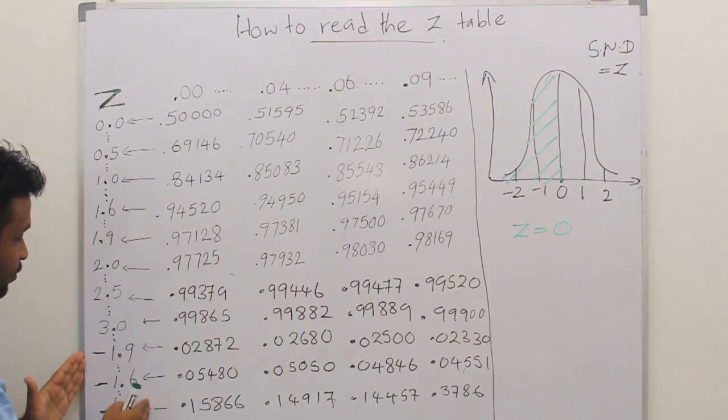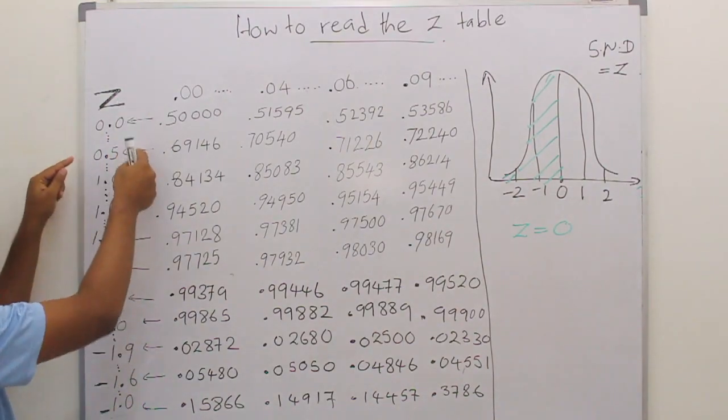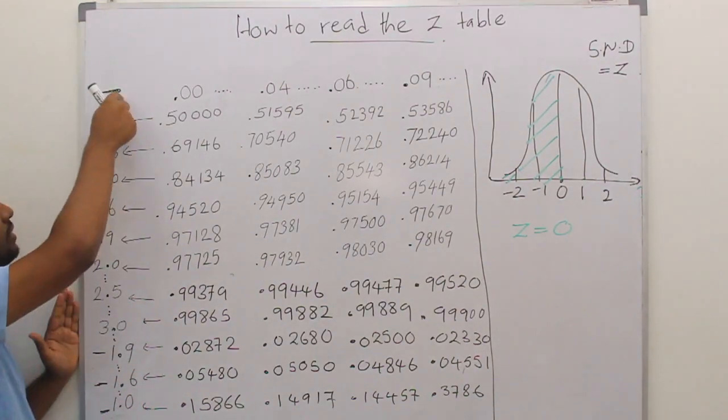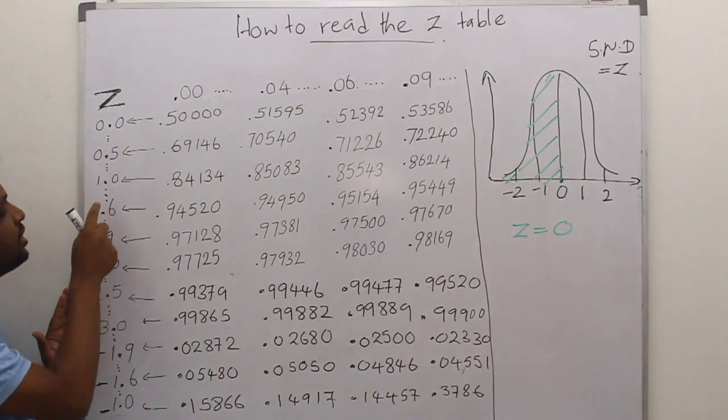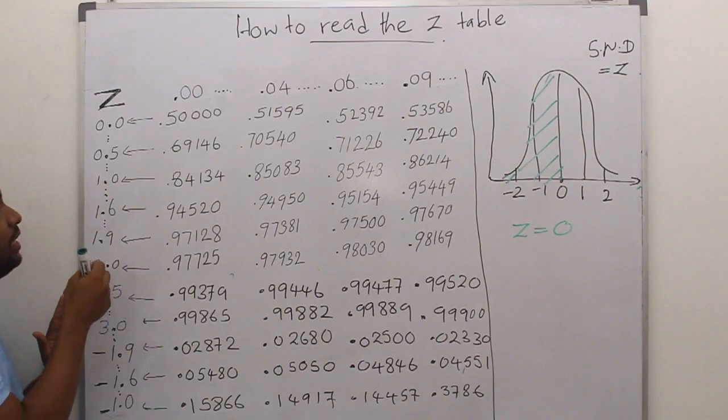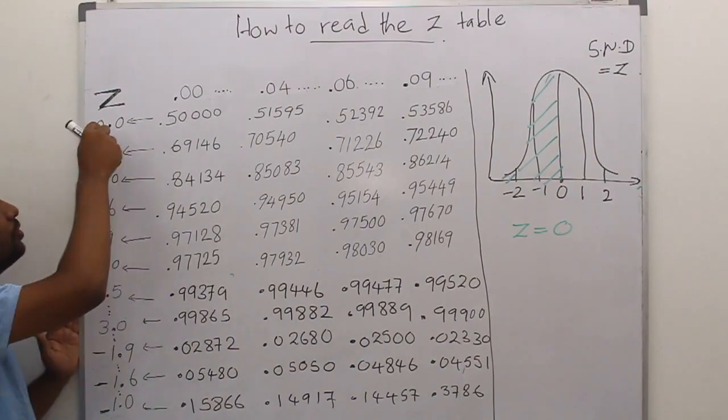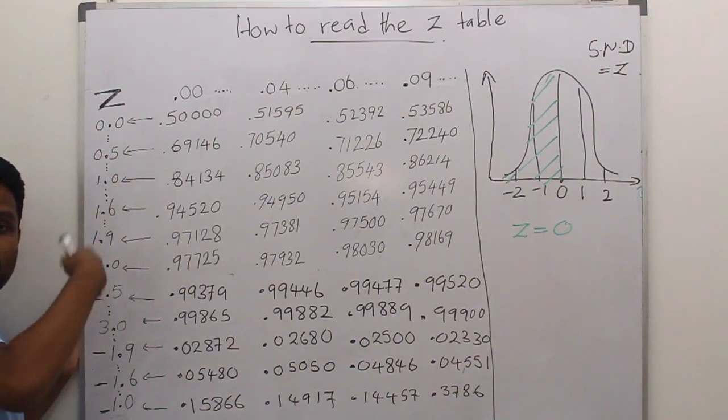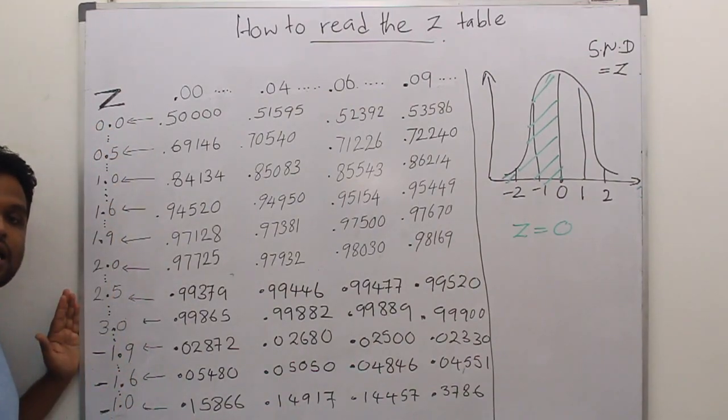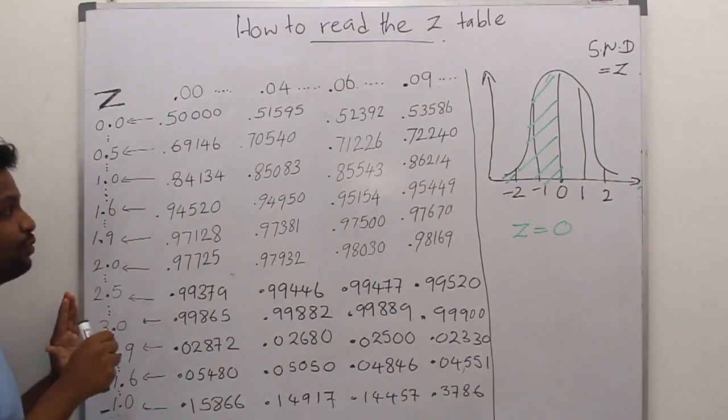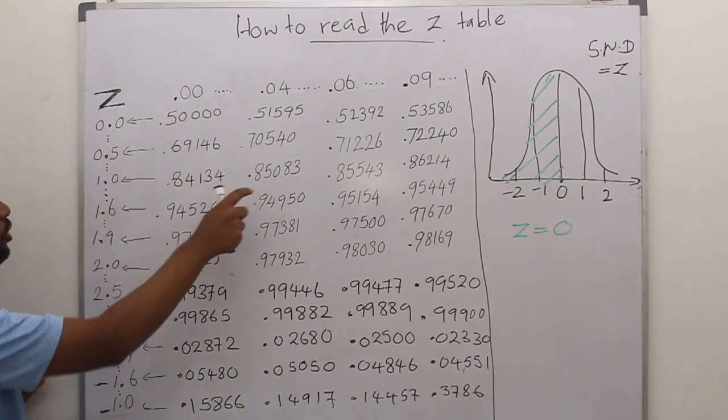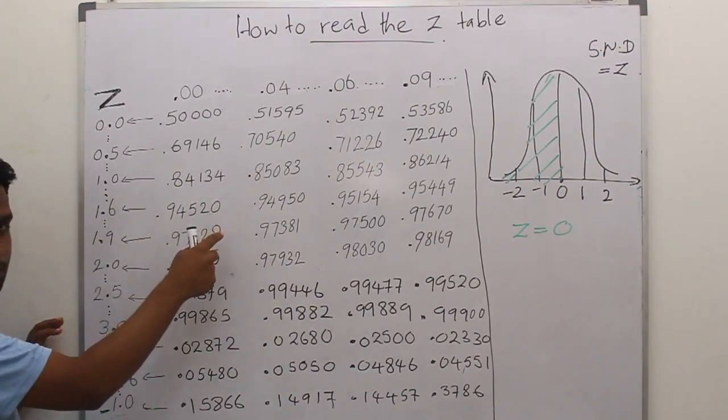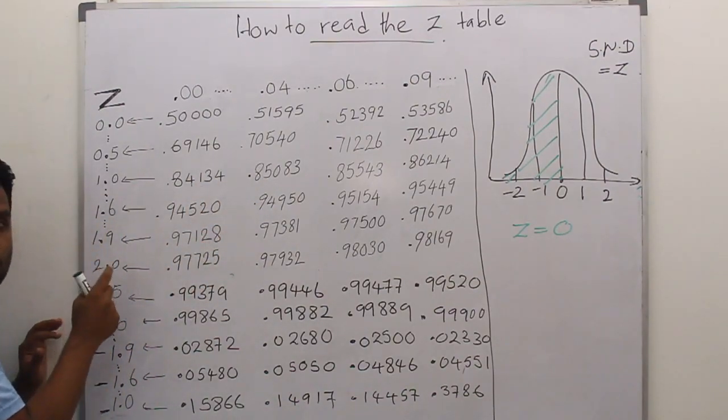In the Z table, in the first column, we have the Z values. Z score 0, Z score 0.5, Z score 1, 1.6, and so on. Generally we have 0.1, 0.2, and so on. I have omitted many of the values and only got a few values. I got only the 0 row and 0.5 row, 1 row, 1.6 row. But keep in mind, we have the other rows as well: 1.7, 1.8, 1.9, 2, and so on.